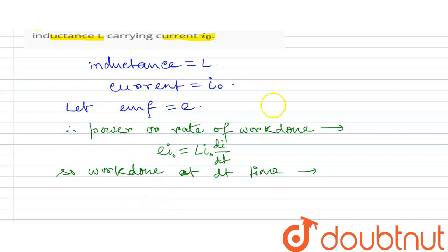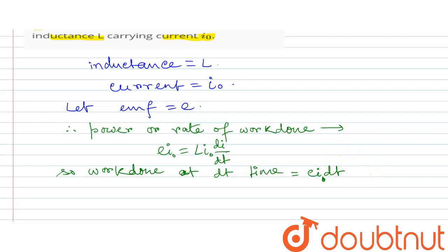So work done at time dT is equal to E·I·dI·dt. The power is called E·I·dI/dt. We can see E·I·dI/dt — that means E·I·dI/dt.